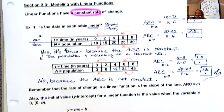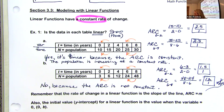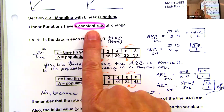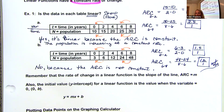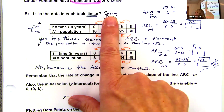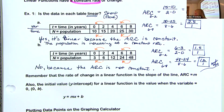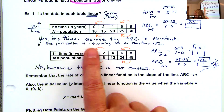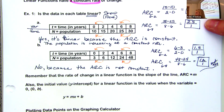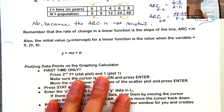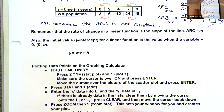We are talking about linear functions, and the difference is they have a constant rate of change. We looked at Example 1 with tables — if asked to show or prove a table is linear, you show average rate of change and compare. If the rates were equal, yes, it's linear. If not, it does not have a constant rate of change. That's where we left off on Monday.